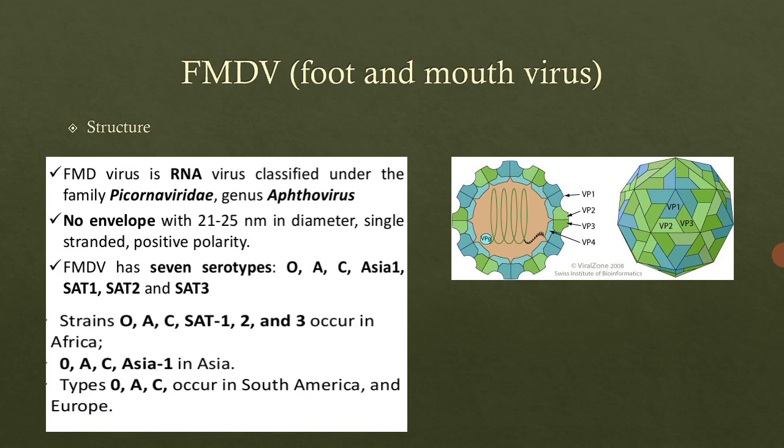An important point is that this virus infection is present only in cloven-footed animals. 'Cloven' means the splitting or cleaving of something — so animals whose feet are split into two parts are called cloven-footed animals. This includes cows, sheep, and goats, and in these animals this virus infection may occur.